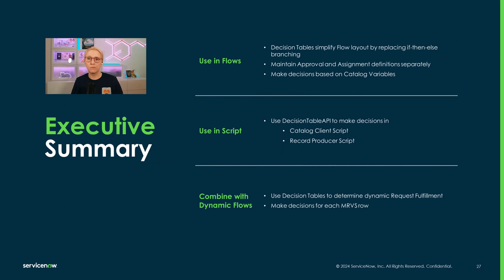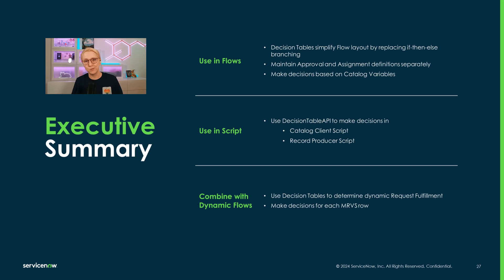Now let's do a little recap of what we learned today. Decision tables are incredibly versatile — they can be used in flows and any script on the Now platform. Additionally, they allow you to hand over the maintenance of decisions to process owners to make changes without having to touch the actual flows and scripts. The default result lets you specify a fallback option, catching everything that does not satisfy any of the condition rows above. Decision inputs and results can be almost anything: from simple string, integer, boolean, or choice fields, but also currency, date, and reference fields.